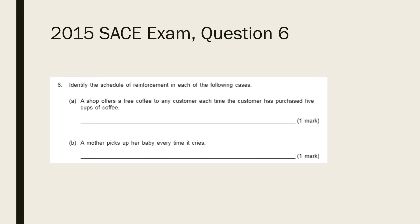Let's look at a past exam question on schedules of reinforcement. For part A, reinforcement is given based on customer response rather than an interval of time, so it is a ratio schedule. As customers are reinforced after a set number of responses — every five cups of coffee — it is a fixed ratio schedule. For part B, the mother reinforces the baby every time it cries, so this is an example of a continuous reinforcement schedule. Hopefully this video has helped you understand the key principles of operant conditioning and how to identify them in scenarios.